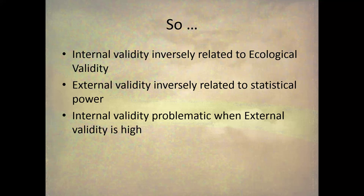External validity is inversely related to statistical power. More external validity means more different types of people and more extraneous variables in your study, which means lower statistical power. And internal validity is also problematic when external validity is high: high external validity brings in different types of people and extraneous variables, which threatens internal validity.